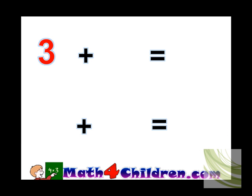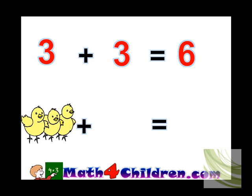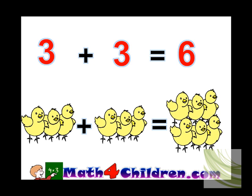3 plus 3 equals 6. 3 chicks plus 3 chicks equals 6 chicks.